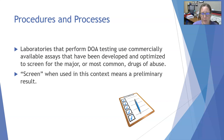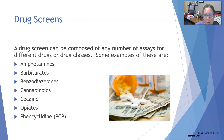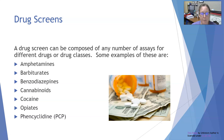Labs that perform drug abuse testing use commercially available assays that have been developed and optimized to screen for major and most common drugs of abuse. The screen means a preliminary result — presumably positive for opiates or presumably positive for benzodiazepines. A drug screen can be composed of any number of assays for different drugs and drug classes. Examples of typical drugs included are: amphetamines, sometimes specifically methamphetamines, barbiturates, benzodiazepines, cannabinoids, cocaine, opiates, and PCP.